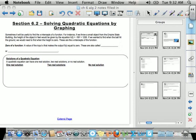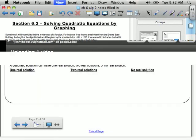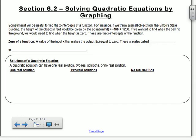Section 6.2 is on solving quadratic equations by graphing. We're going to do some t-tables to figure out what our parabola looks like.